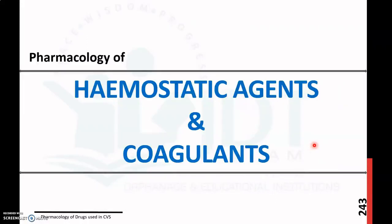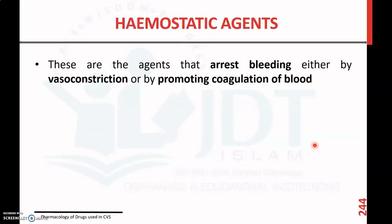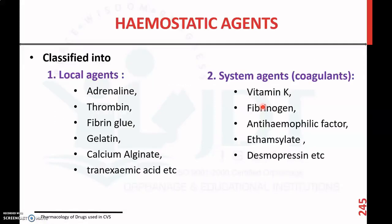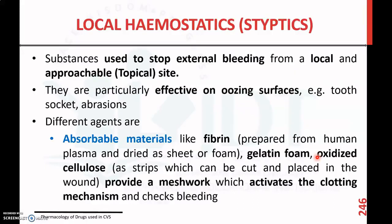Hemostatic agents are agents that arrest bleeding either by vasoconstriction or by promoting coagulation of the blood. They are classified into local agents and systemic agents. Systemic agents are known as coagulants and promote coagulation of the blood. Examples of local agents include adrenaline, thrombin, fibrin glue, gelatin, calcium alginate, and tranexamic acid. Systemic agents or coagulants include vitamin K, fibrinogen, anti-hemophilic factor, etamsylate, and desmopressin.